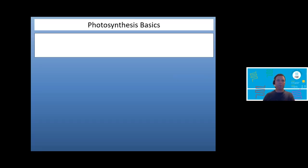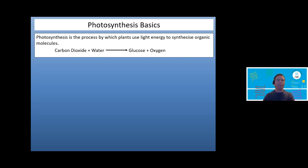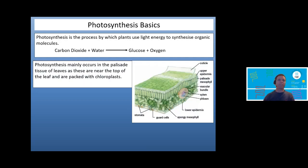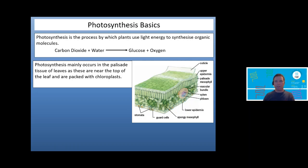Let's look at the basics. Photosynthesis is the way plants use light energy to synthesise organic molecules — really we're talking about glucose. So we have carbon dioxide and water converted to glucose and oxygen. That's from GCSE. Where does it take place? We know it takes place in the leaves, specifically in the palisade mesophyll layer. Those cells are packed with chloroplasts, which contain chlorophyll for absorbing light. Chloroplasts are focused on photosynthesis, which makes perfect sense.